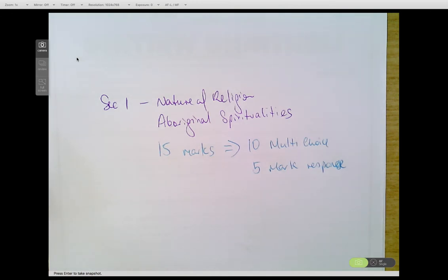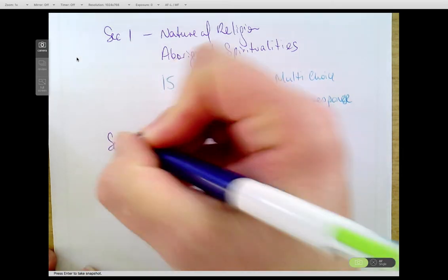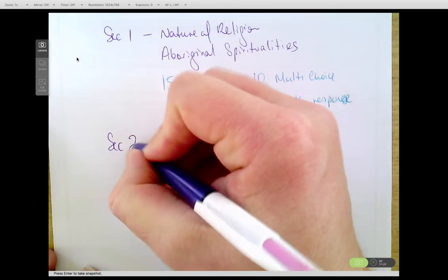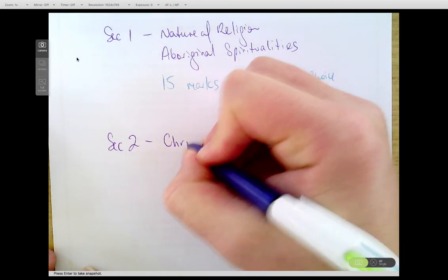Okay, Section 1 you have no choice. You need to answer all 15 marks worth. So the 10 multiple choice questions you don't get a choice in, the 5-mark response you don't get a choice in. The reason I say you don't get a choice is because in Section 2 and 3 you do get a choice.